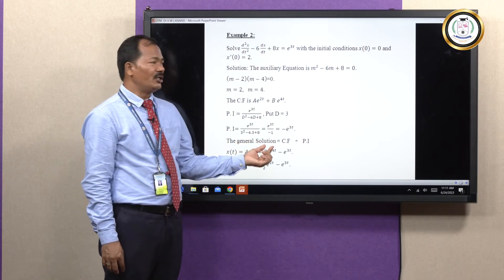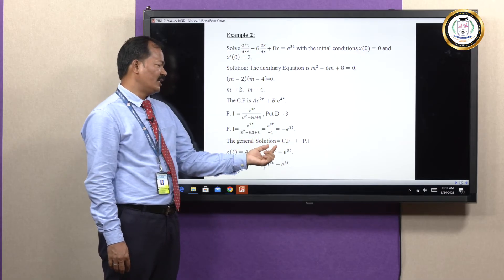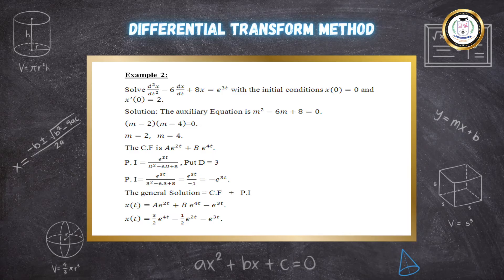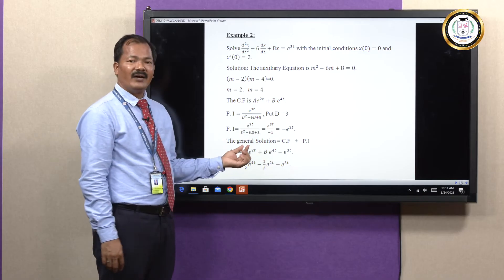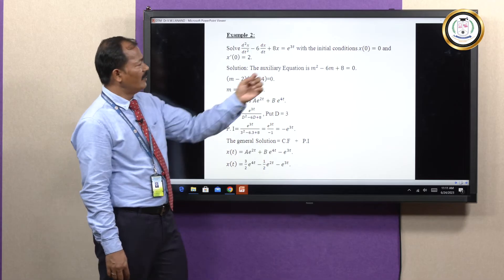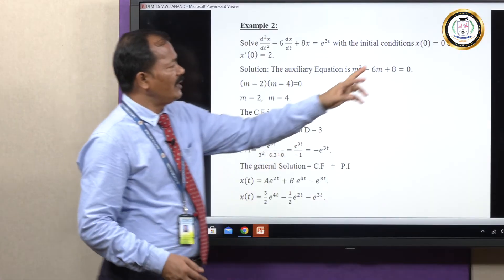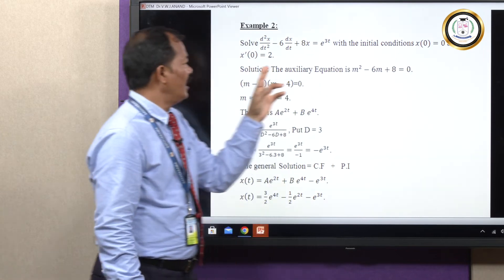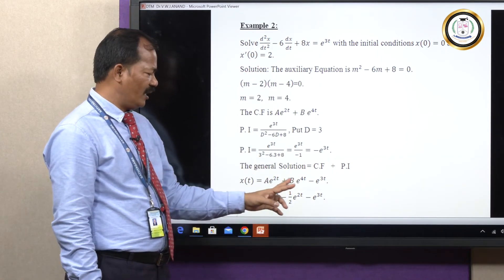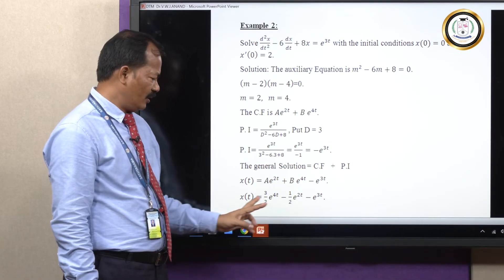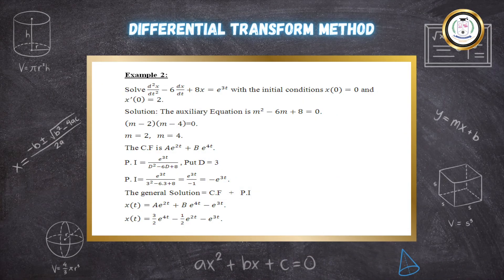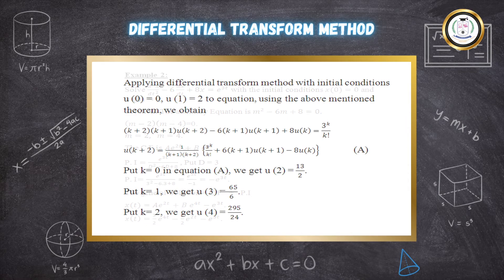Therefore, the general solution is x of t equals a e to the power 2t plus b e to the power 4t minus e to the power 3t. Using the initial conditions x of 0 equals 0 and x-prime of 0 equals 2, we find the values of a and b, giving the general solution as x of t equals 3 upon 2 times e to the power 4t minus 1 over 2 times e to the power 2t minus e to the power 3t.